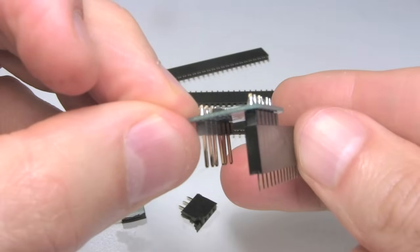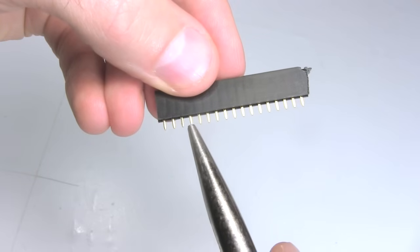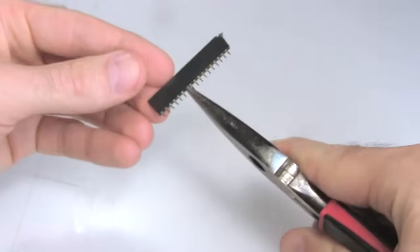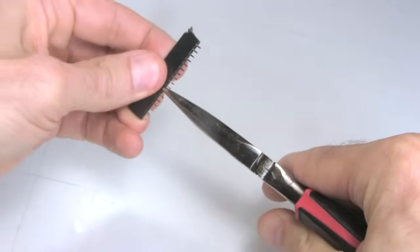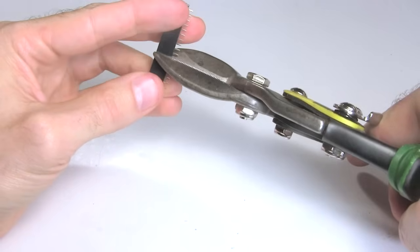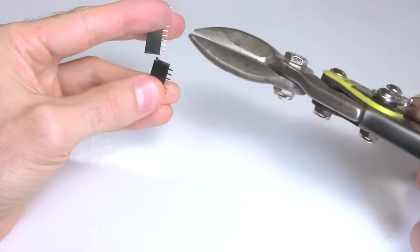For the board, I'll need two rows of six. To cut the headers, count out the number of holes you need, six in my case. Then use some pliers or something to pull out the pin for the next one, the seventh in my case. That leaves a wide section between the pins. Use a set of cutters to cut along the middle of that section.